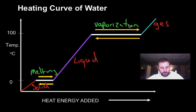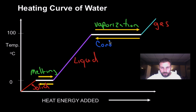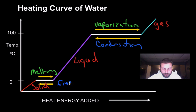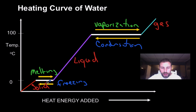We can do the reverse of all this — we can remove heat. And exactly when we go from a gas to a liquid, that's condensation. And over here is freezing, as we go from a liquid to a solid. These plateaus are extremely important areas; these are our phase changes.